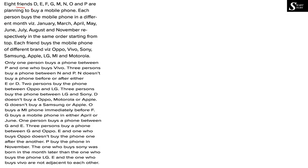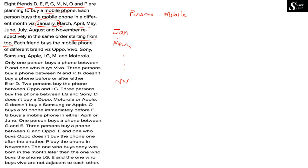As you can see, the question is: 8 friends D, E, F, G, M, N, O and P are planning to buy a mobile phone. Each person buys the mobile phone in a different month. The months given are January, March, April, May, June, July, August and November respectively, starting from the top. So the schedule commences from January and goes till November.